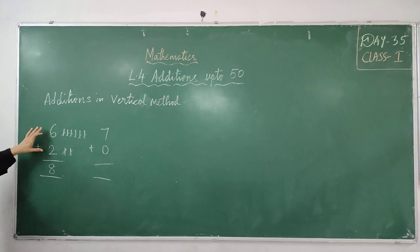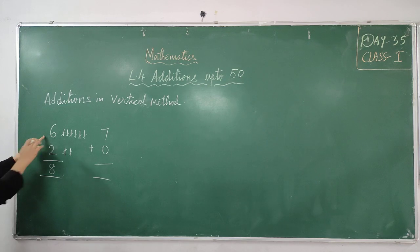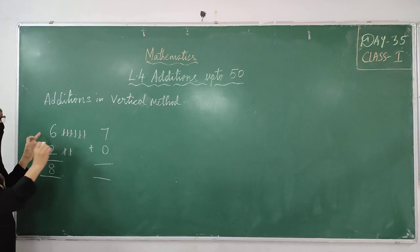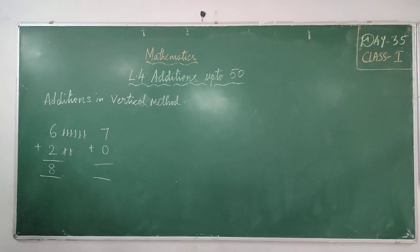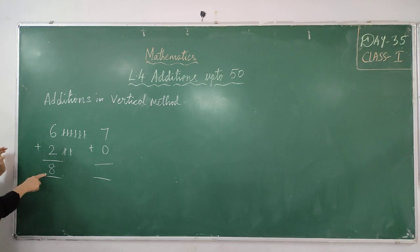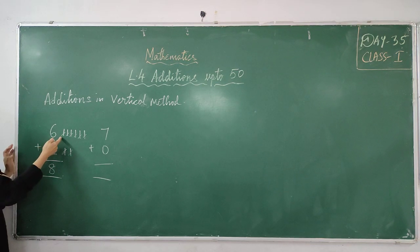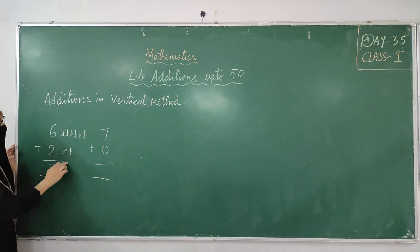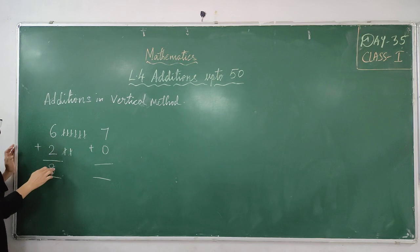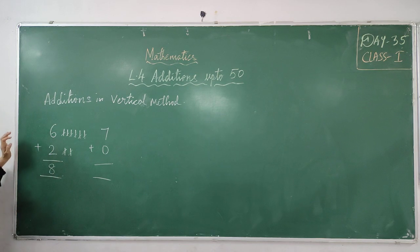Our answer is 8. After counting 6, if you want you can take 6 fingers, then take 2 more fingers — after 6: 7, 8. You can write 8. Or if you want, you can keep circles or lines and count.